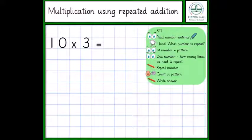The first step they need to do is read the number sentence. 10 multiplied by 3 equals. And they need to think what number are we going to repeat. The first number tells us the pattern we're going to be counting in. And the second number tells us how many times we need to count in the pattern of this number.